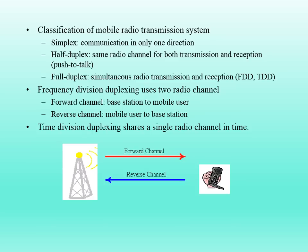Half duplex uses the same radio channel for both transmission and reception, but only one operation takes place at a time — if transmission is taking place, only transmission happens; if reception, only reception. Full duplex allows both transmission and reception to take place simultaneously on the radio channel.